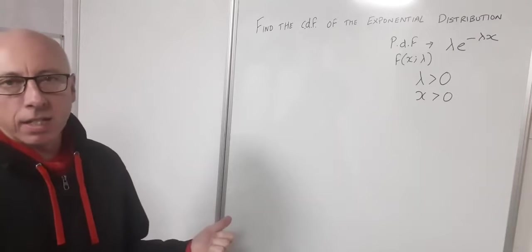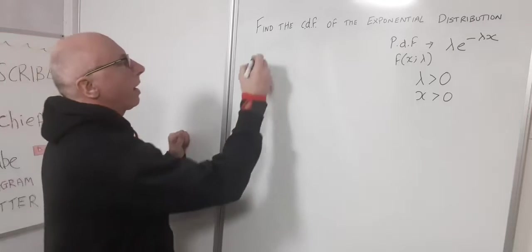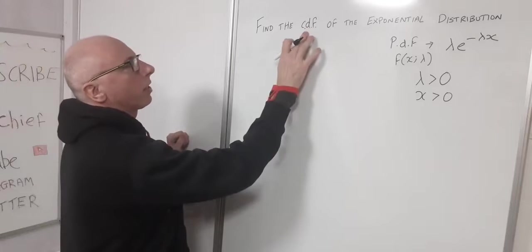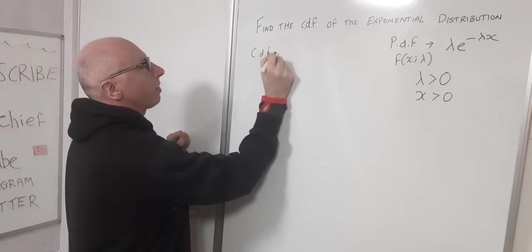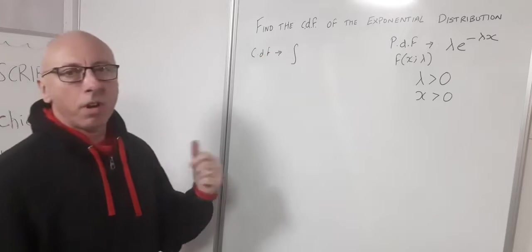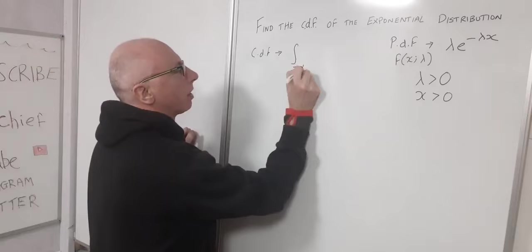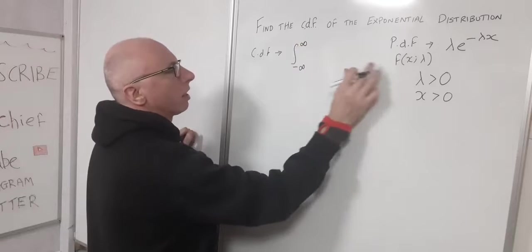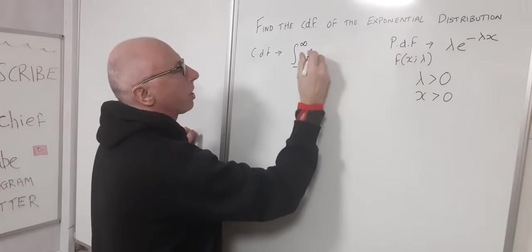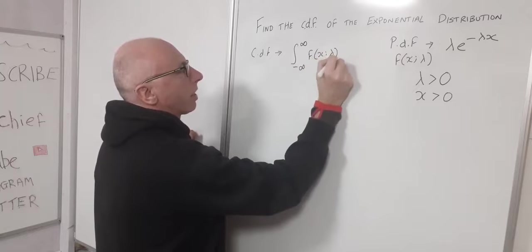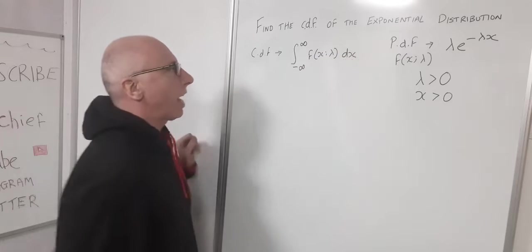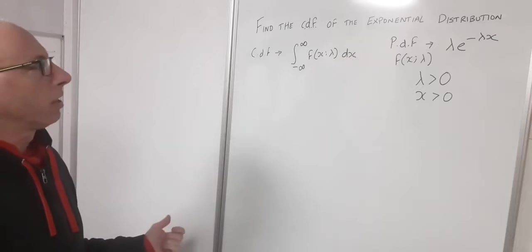Now we want to find the CDF, the cumulative distribution function. The CDF is found by integrating from negative infinity to infinity our PDF, which is this function here, f of x given lambda with regards to x. That's how we do that.